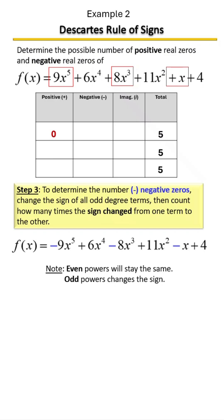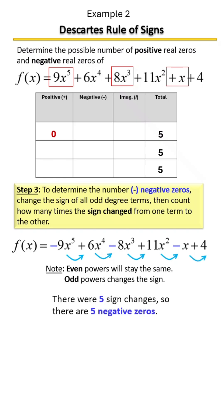Now we're going to count how many times the sign changed. From first to second, did it change? Yes. Did it change? Yes. Did it change? Yes. Did it change? Yes. Did it change again? Yes. How many times did the sign change? Five. So that means that we have five negative zeros.